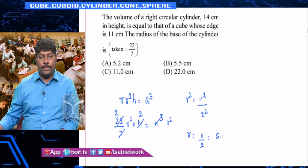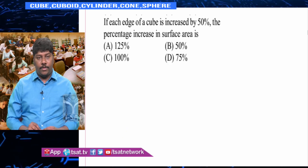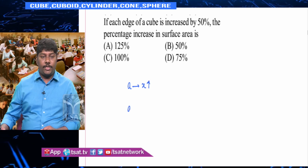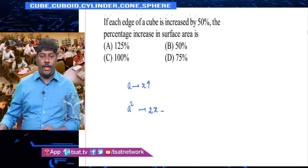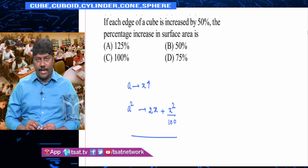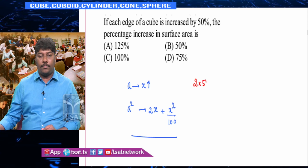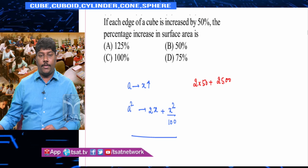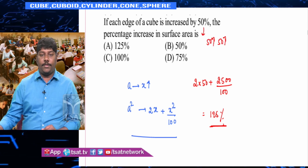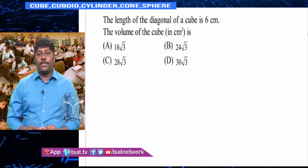If the edge of a cube is increased by 50%, find the percentage increase in surface area. Using the formula: percentage increase in area = 2x + x²/100, where x = 50. So it is 2×50 + 2500/100 = 100 + 25 = 125%. The surface area increases by 125%.